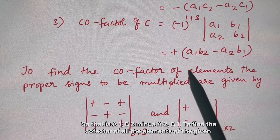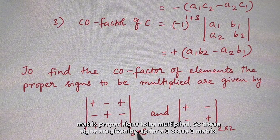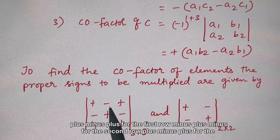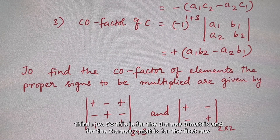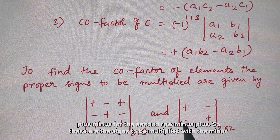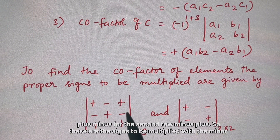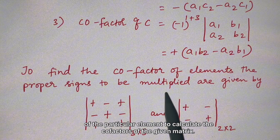To find the cofactor of all elements in the given matrix, proper signs must be multiplied. For a 3×3 matrix, the sign pattern is: [+, -, +; -, +, -; +, -, +]. For a 2×2 matrix, the sign pattern is: [+, -; -, +]. These signs are multiplied with the minor of a particular element to calculate its cofactor.